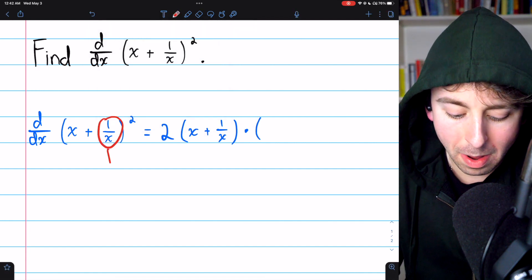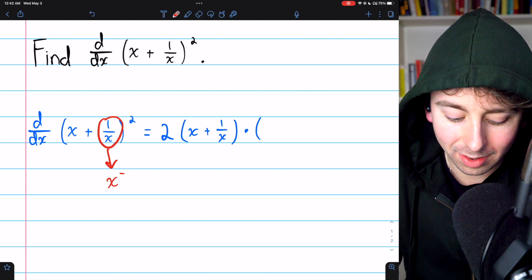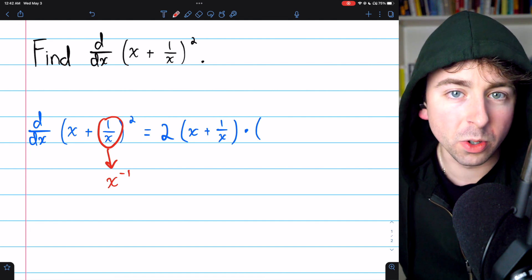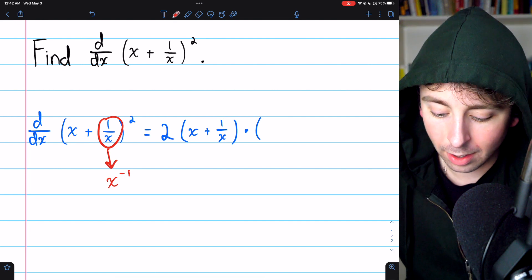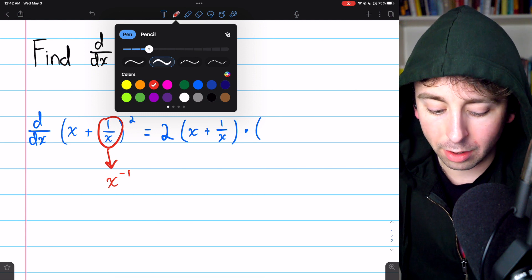And when we do this, remember that one over x is the same as x to the negative one. So all we're doing here is using the power rule. So what's the derivative of x plus one over x?